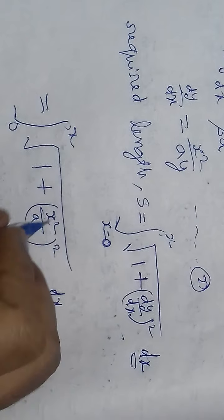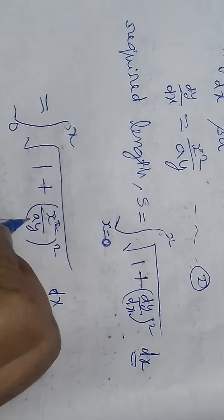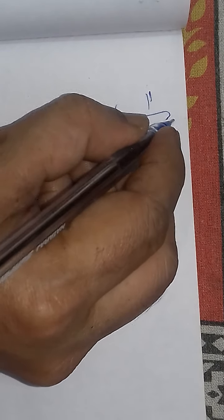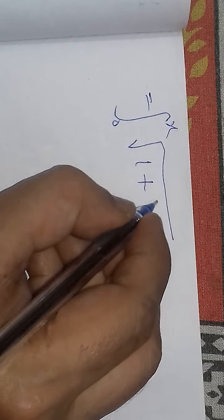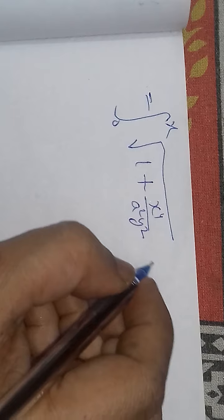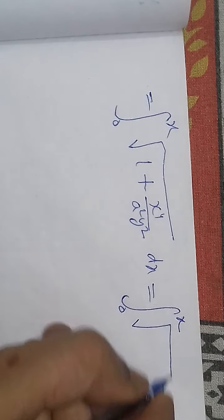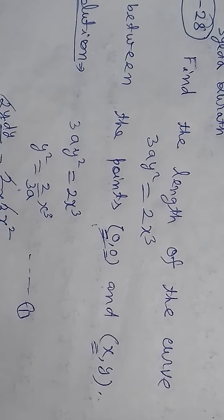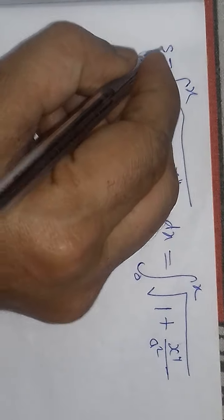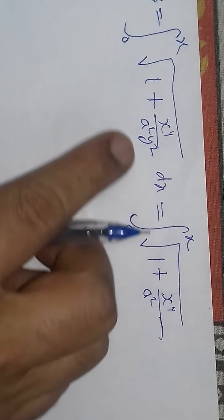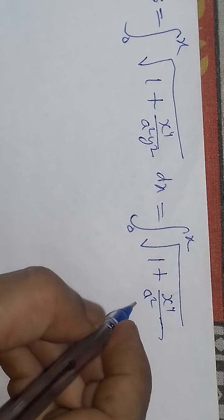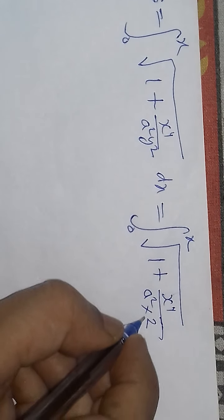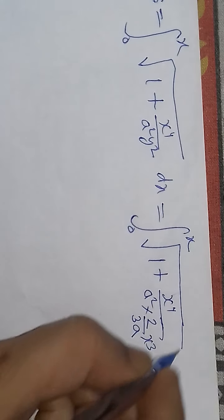Opening the square: (dy/dx)² = x⁴/(a²y²). The integral becomes from 0 to x of √(1 + x⁴/(a²y²)) dx. We substitute the value of y² from equation number 1: y² = (2/3a)x³. So 1 + x⁴/(a² · (2/3a)x³) simplifies. And the last term is dx.